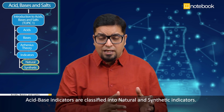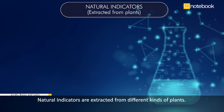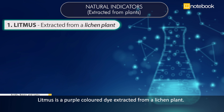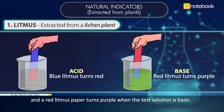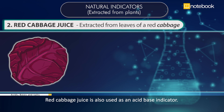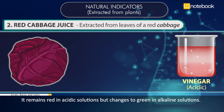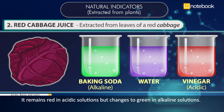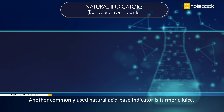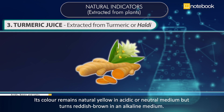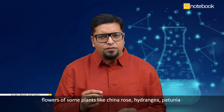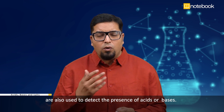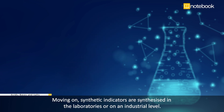Acid-base indicators are classified into natural and synthetic indicators. Natural indicators are extracted from plants. Litmus is a purple-colored dye extracted from a lichen plant — blue litmus paper turns red in acidic solutions, and red litmus paper turns purple in basic solutions. Red cabbage juice remains red in acidic solutions but changes to green in alkaline ones. Turmeric juice remains yellow in acidic or neutral medium but turns reddish-brown in alkaline medium. Flowers of plants like China rose, hydrangea, and petunia are also used to detect acids or bases.